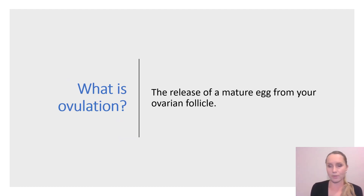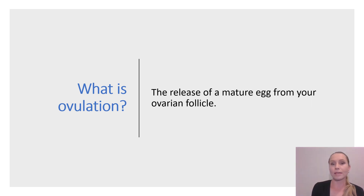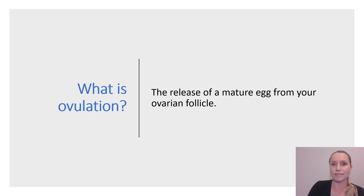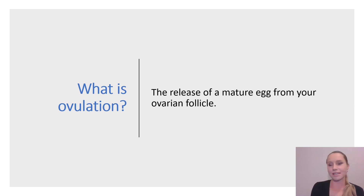Ovulation is the release of a mature egg or ovum from the ovarian follicle. Each menstrual cycle, several ovarian follicles will begin to mature and develop under the influence of your pituitary hormones. Usually only one follicle develops fully, and while the other follicles recede, it's this dominant follicle that produces an egg, which is going to be released and which is then going to be able to be fertilized, hopefully.